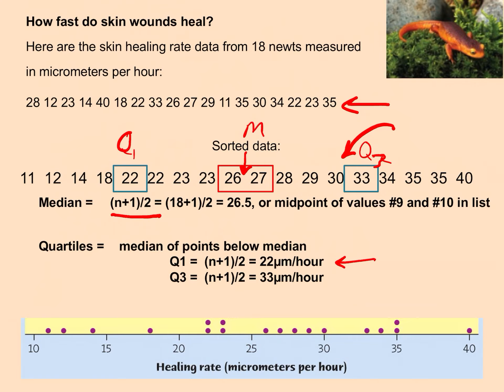Looking at the dot plot, this makes sense — if you looked at the range of values from 11 up to 40, you'd estimate the median is somewhere in the middle, and Q1 and Q3 divide the data into quarters. This is just a way to organize the data and begin to describe the distribution in terms of how much variation we have around the central tendency of that distribution, whether we use mean or median as our measure of middleness.